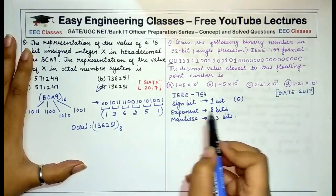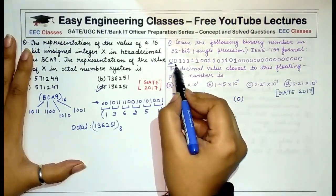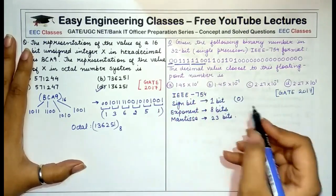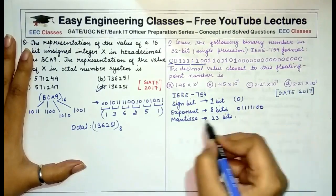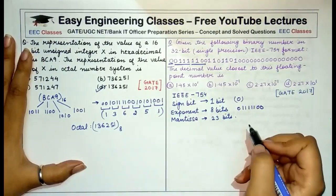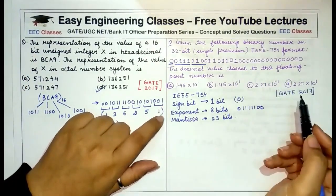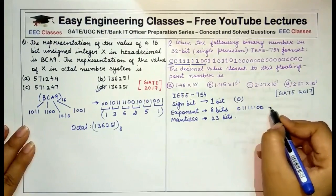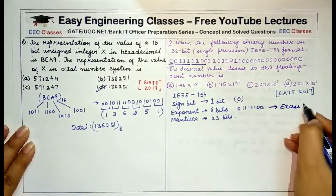The next 8 bits represent the exponent: 01111100. The remaining 23 bits are the mantissa. In IEEE 754, the exponent is expressed in excess-127 (XS127) code, meaning the actual exponent equals the stored value minus 127. The stored exponent value is 124, so the actual exponent is 124 − 127 = −3.